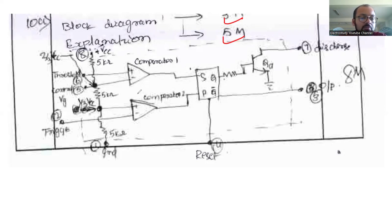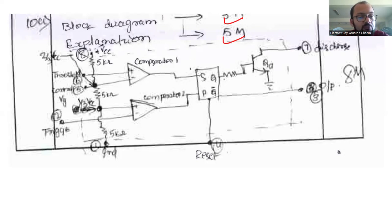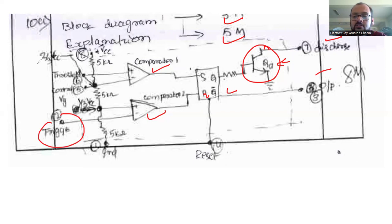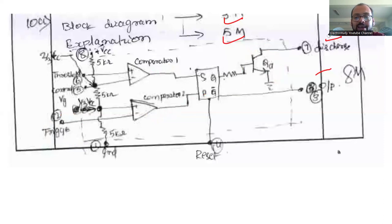Mention the major components available inside the 555 timer. The image quality may be a bit poor since it is a freehand drawing, so you can search for a clearer image. The key components are: comparators, an SR flip-flop, and a transistor. Transistor logic is available as well. Mention the output and explain the brief working. These are the major things to include in your answer for question 10a.